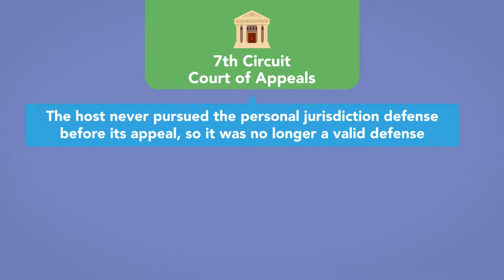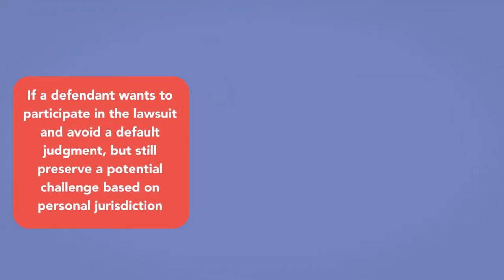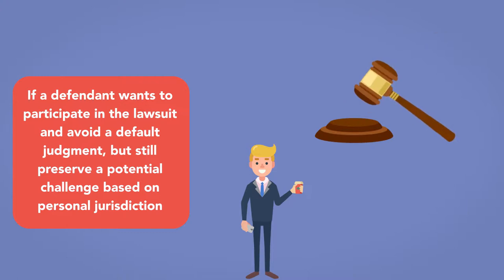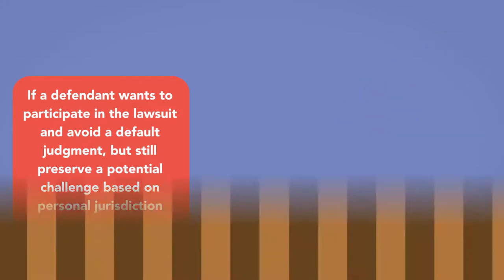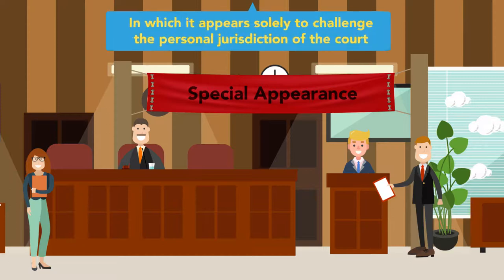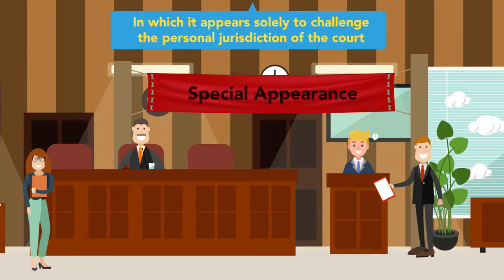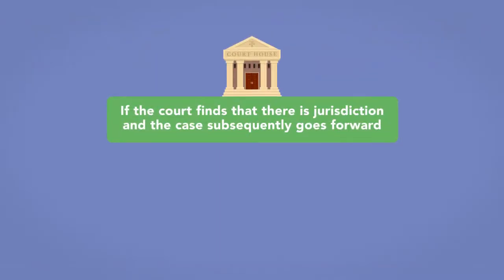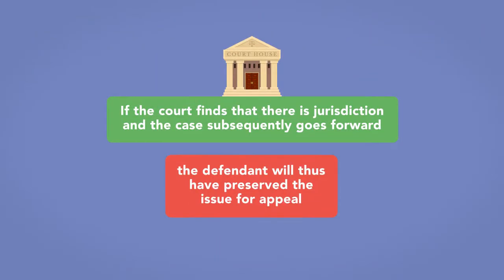If a defendant wants to participate in the lawsuit and avoid a default judgment, but still preserve a potential challenge based on personal jurisdiction, it can make a special appearance in which it appears solely to challenge the personal jurisdiction of the court. If the court finds there is jurisdiction and the case subsequently goes forward, the defendant will thus have preserved the issue for appeal.